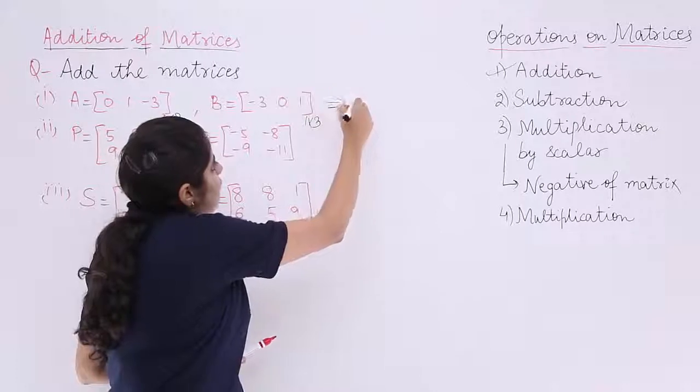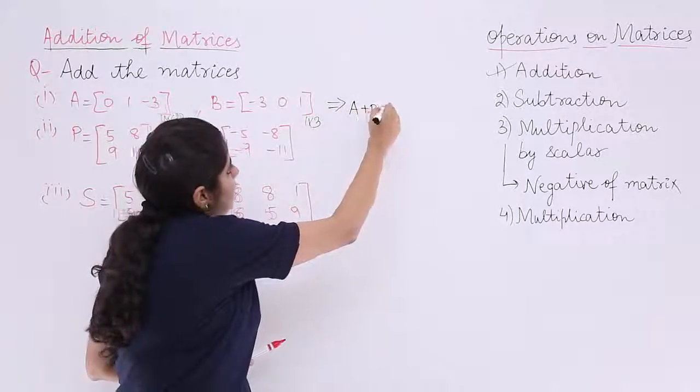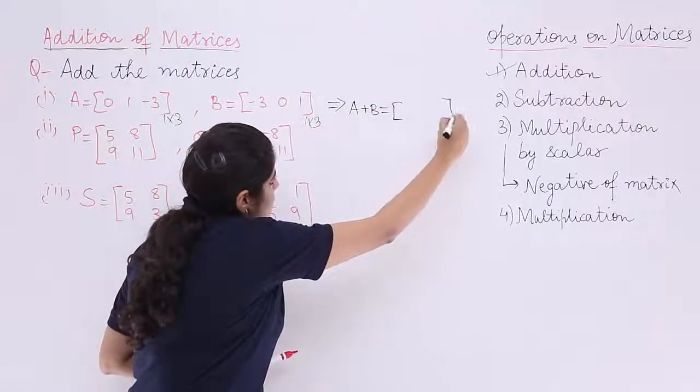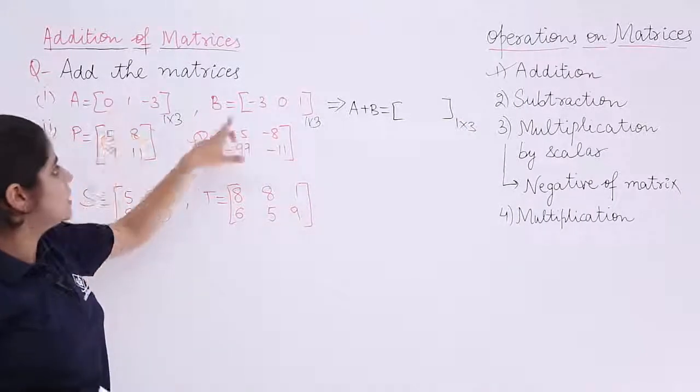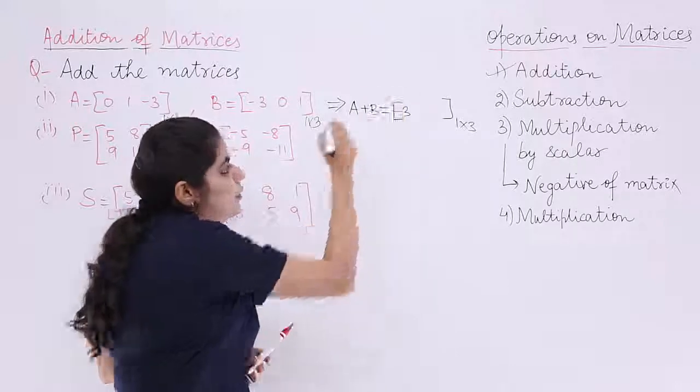The resultant of A plus B is another matrix of the same order which is 1 by 3. Add 0 and minus 3 gives me minus 3. Correct.